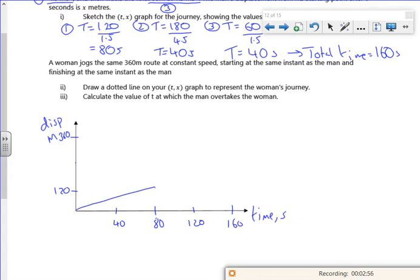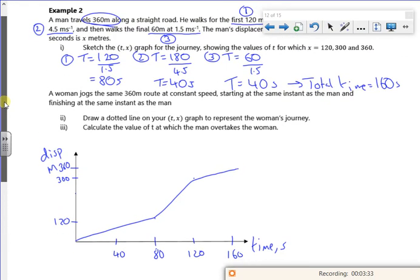Then we do the next 180. That's going to take us up to 300. And that we do in 40 seconds, so that's probably about there. So I've got the first bit, I've got the second bit. And then the final bit, I do it in 40 seconds and get up to 360. So I'll try and put a dot in around there. So that's the man.